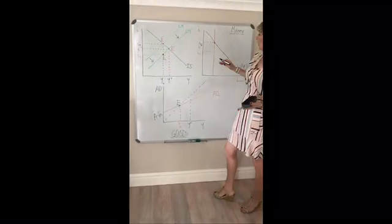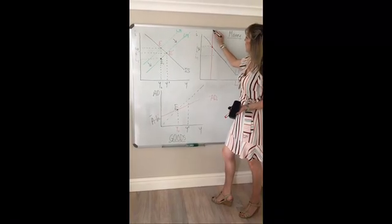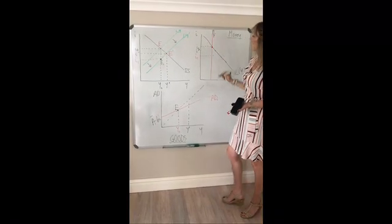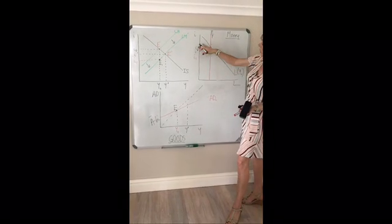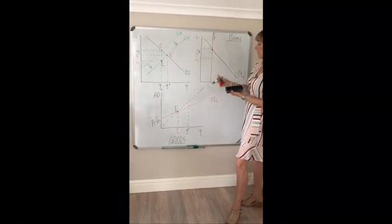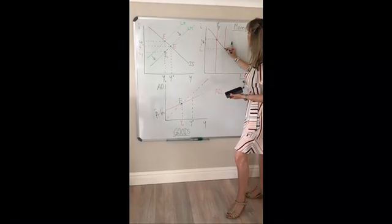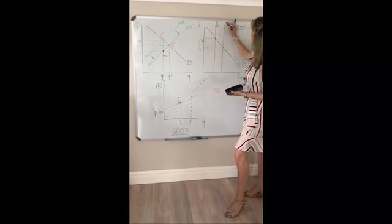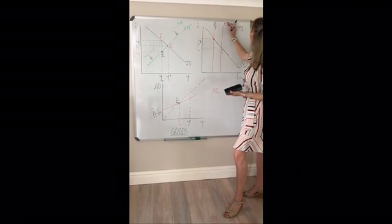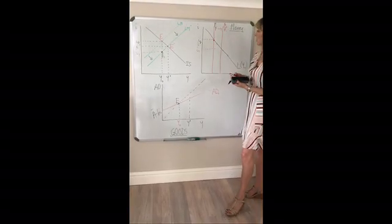We know that equilibrium in the money market is where your money demand curve intersects your money supply curve. So what happens when the money supply increases? This whole line is going to shift to the right. So we're going to get a new increased money supply, so it's going to shift to the right.